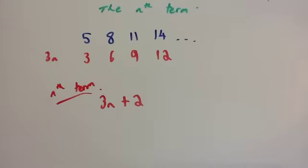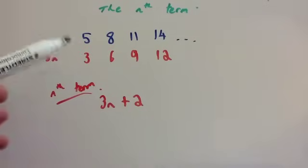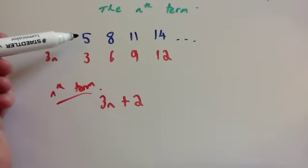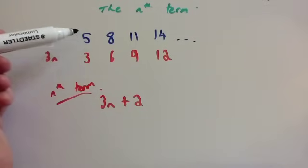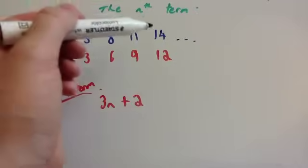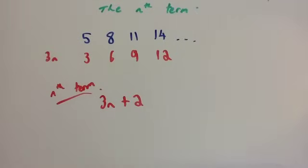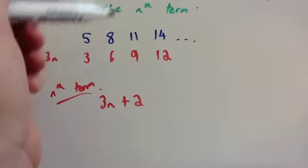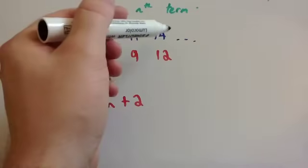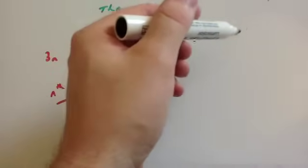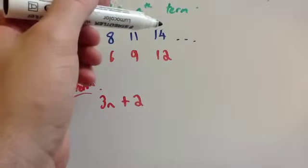You might think: what's the point of the nth term? Why is it useful? Well, the nth term is really useful to work out terms in the sequence without having to carry on the sequence. So if we look at our original sequence — 5, 8, 11, 14 — imagine I wanted to know the 100th term. We could write the 5th, 6th, 7th, 8th, 9th terms and keep on adding 3.